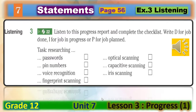Now let's move to Exercise 3. You have to listen to a progress report and complete the checklist in front of you. Write D for job done, I for job in progress, or P for job planned. Are you ready to listen and write the letters? Let's listen.